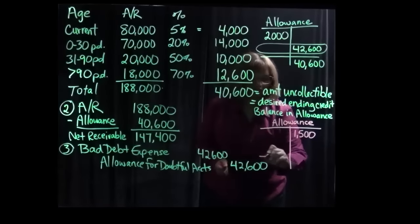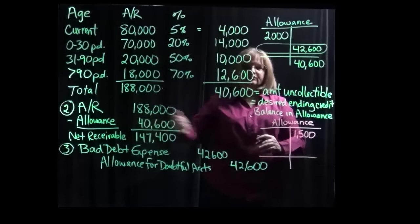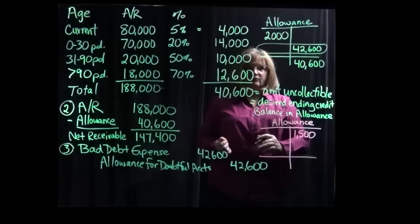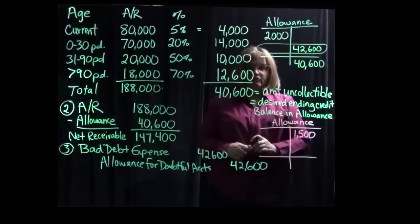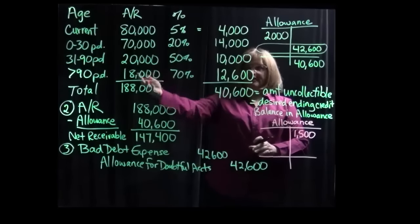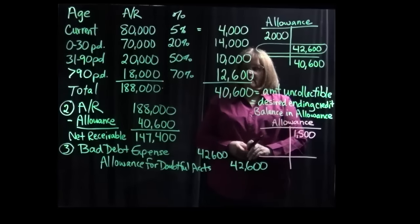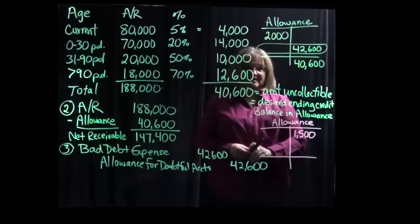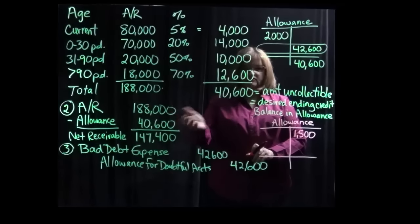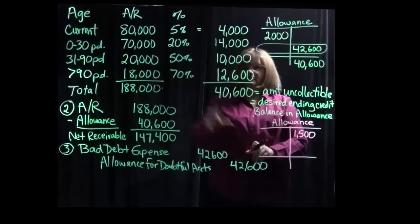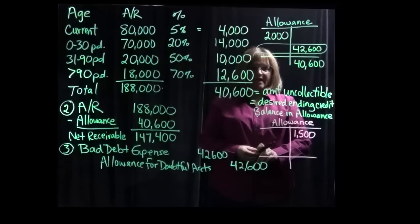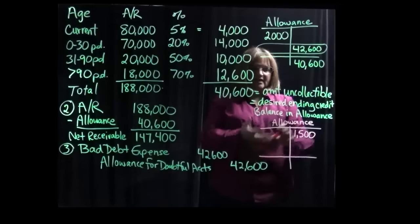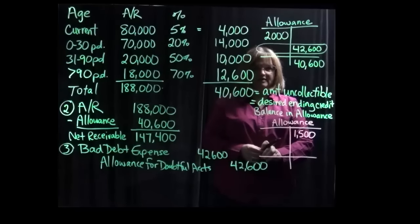Nothing in part one or part two changes. We still are estimating that we want the balance in the allowance to be $40,600 on the credit side given these percentages of these balances. The net realizable value is the same. It's the receivable balance minus what we think is uncollectible. So none of that changes. The only thing that changes is what entry we need to make for bad debt expense given a different starting balance in the allowance account.